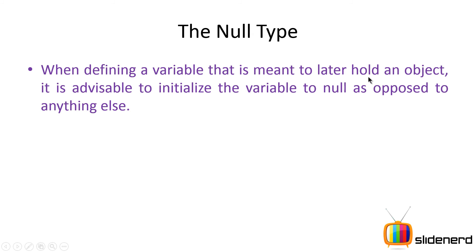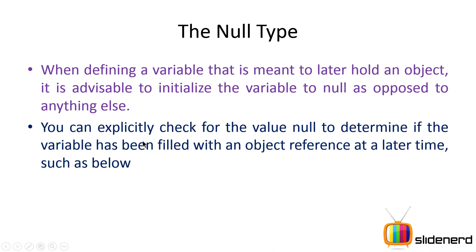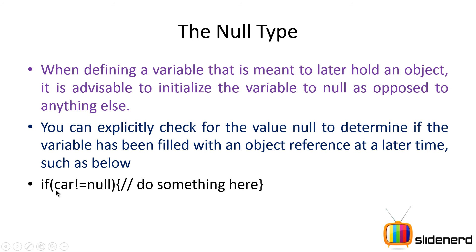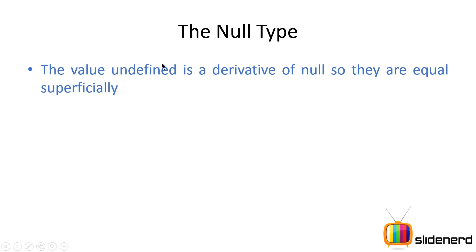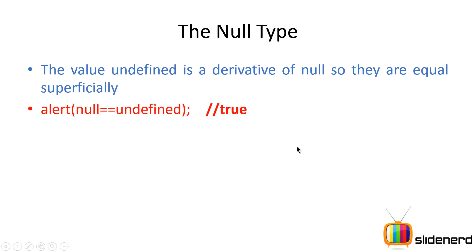When defining a variable that is going to hold an object later, it is better to initialize that variable with null rather than anything else. You can then check the value: if car != null, it contains meaningful data; if car == null, it contains no meaningful information. Now, null and undefined are somewhat similar — both indicate a meaningless value — but they are different, as we'll see.